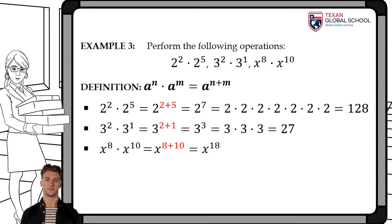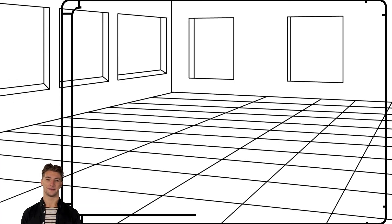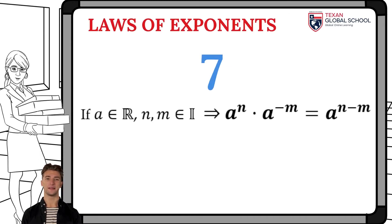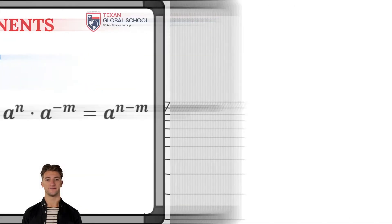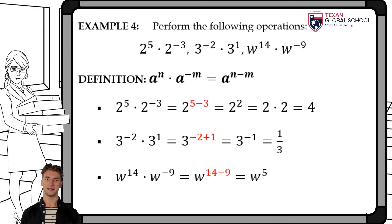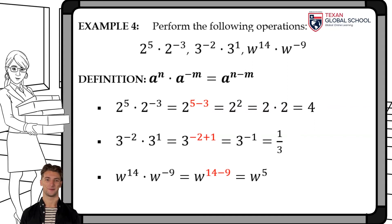In this way, the definition is deduced where the product of two numbers with the same base a and exponents with opposite signs is equivalent to simplifying the base and making the difference of its exponents. For example, 2 raised to the fifth times 2 raised to the negative 3 is simplified as 2 squared, obtaining a result of 4. Also, 3 raised to the negative 2 times 3 equals 3 to the negative 1, which is one-third. Finally, w raised to 14 times w to the negative 9 results in w raised to the fifth power.